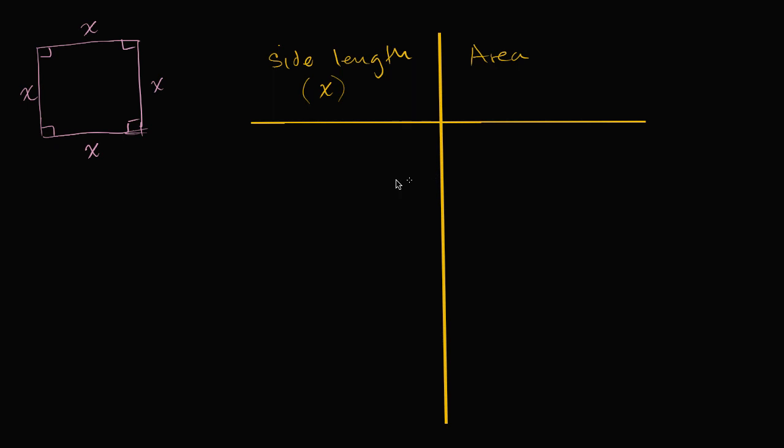And then over here I'm going to put area. What's the area going to be? Well, the area is going to be one of the sides squared. You can view it as the width times the height. So it's going to be x times x, or x squared.